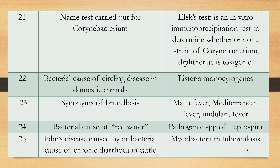Question 22: What is the bacterial cause of circling disease in domestic animals? Note: the question asks for the bacterial cause, not the protozoal cause. Answer: Listeria monocytogenes causes circling disease in domestic animals. If it is a protozoal cause, then Trypanosoma produces circling disease.